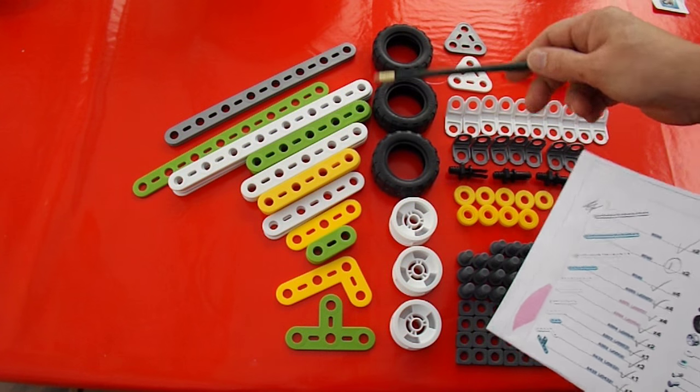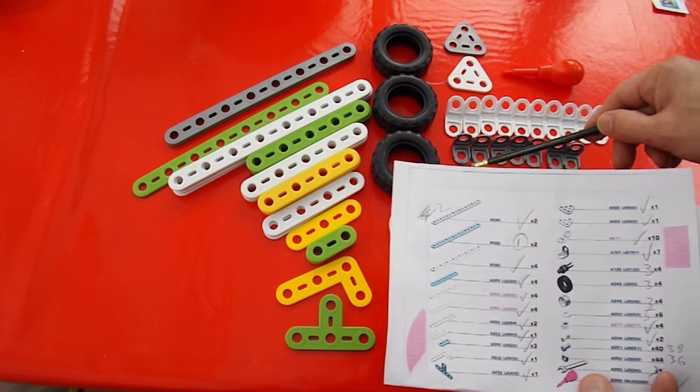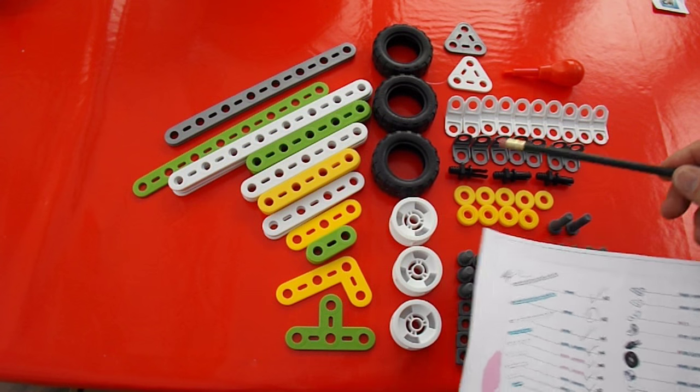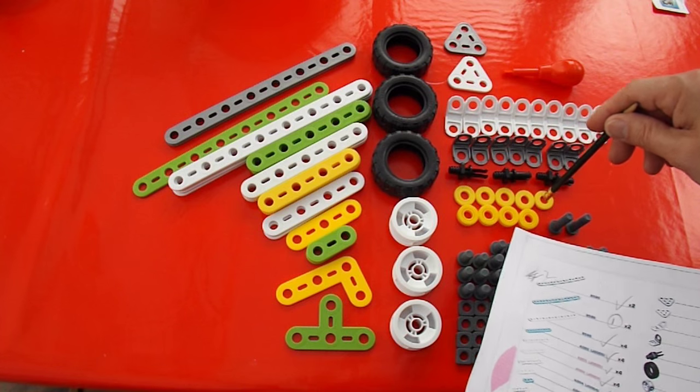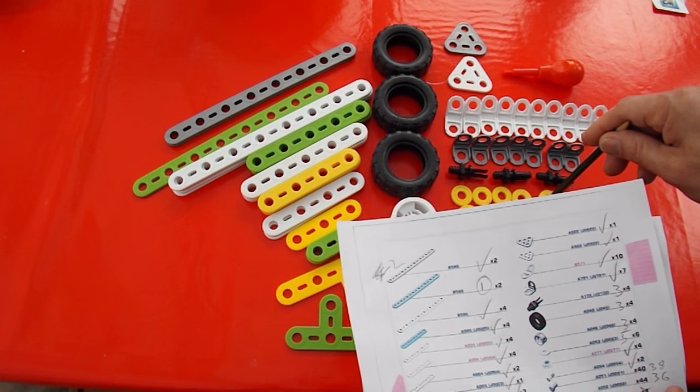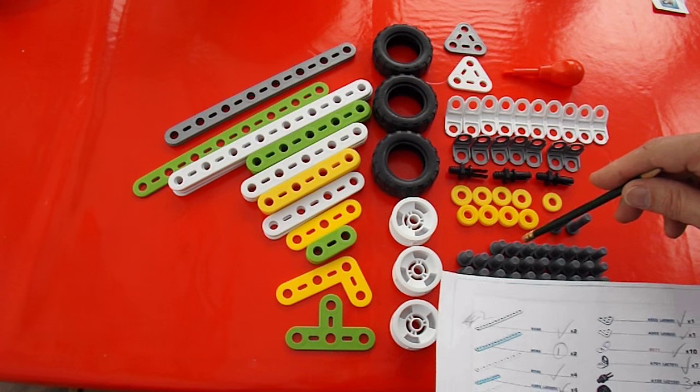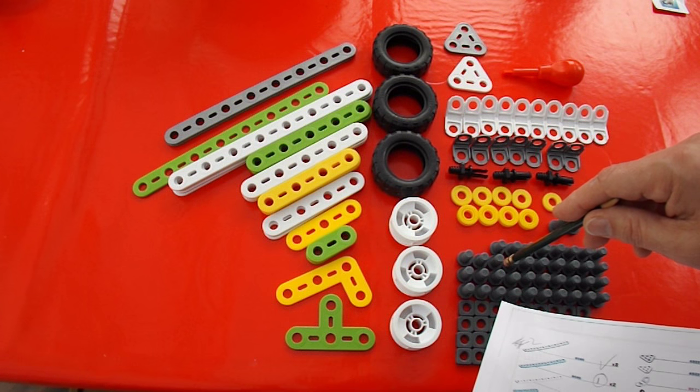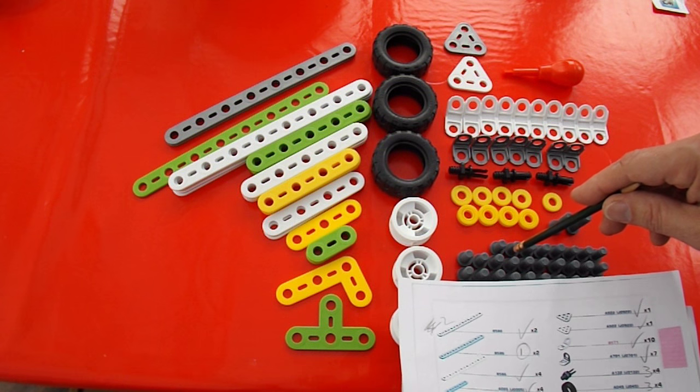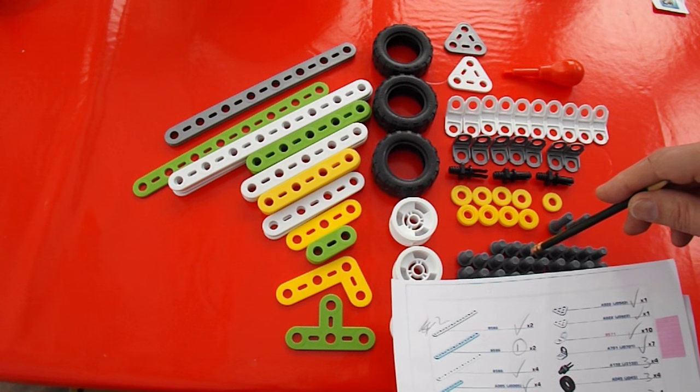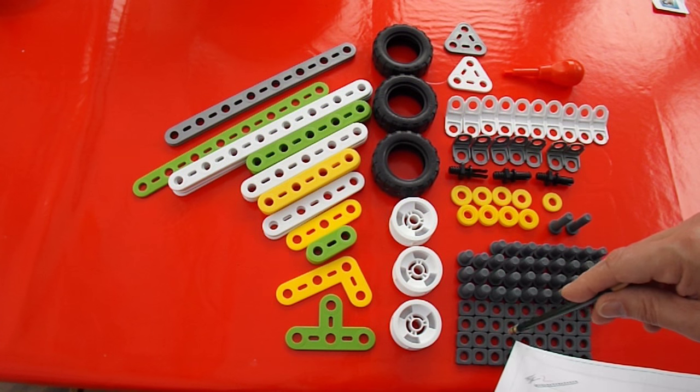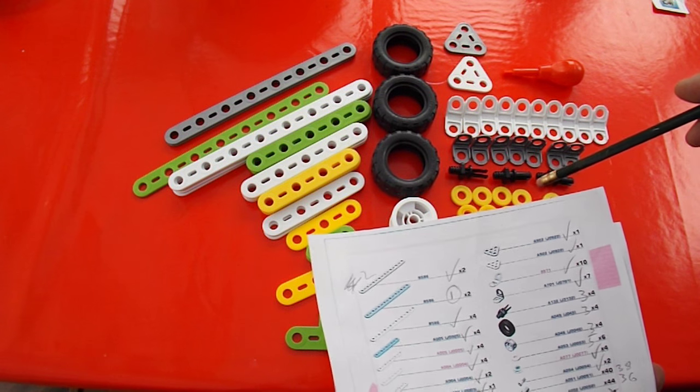We're missing a tire, a hub, and one of these stub axles. Then we're missing one of these little yellow discs. We should have 40 bolts and we've only got 38. And we should have 44 nuts and we've only got 36.